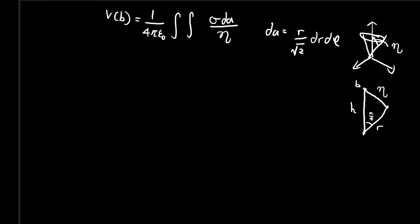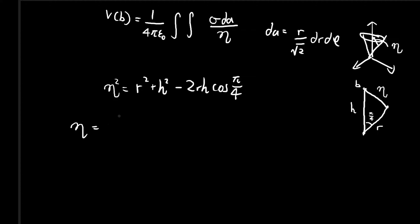We can use the cosine law to find η. So η² is going to be equal to r² + h² − 2rh·cos(π/4). Therefore η equals the square root of r² + h² − (2/√2)·rh, i.e., r² + h² − √2·rh.